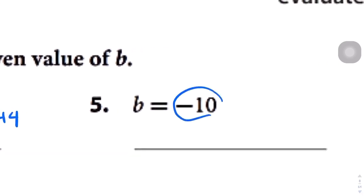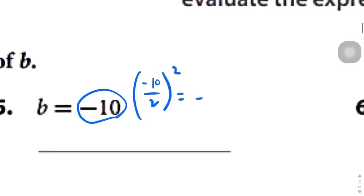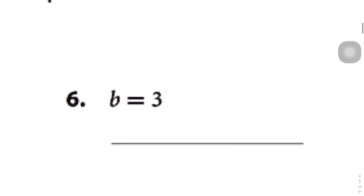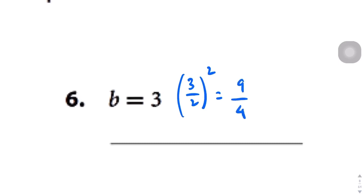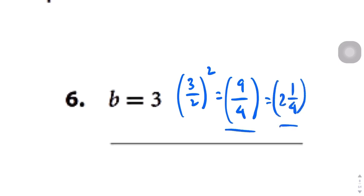Let's do the same thing again. We're going to plug this b value into the function. Negative 10 over 2 squared — negative 10 divided by 2 is negative 5, then squared: negative 5 squared is 25, since it's negative 5 times negative 5. Question number 6: let's put that into this function again, b over 2 squared. We need to write 3 over 2 squared. 3 divided by 2 gives us 1.5, but I'll just square it as a fraction: 3 squared is 9, 2 squared is 4. So the answer is 9/4, or the mixed number 2 and a fourth — either answer is correct.